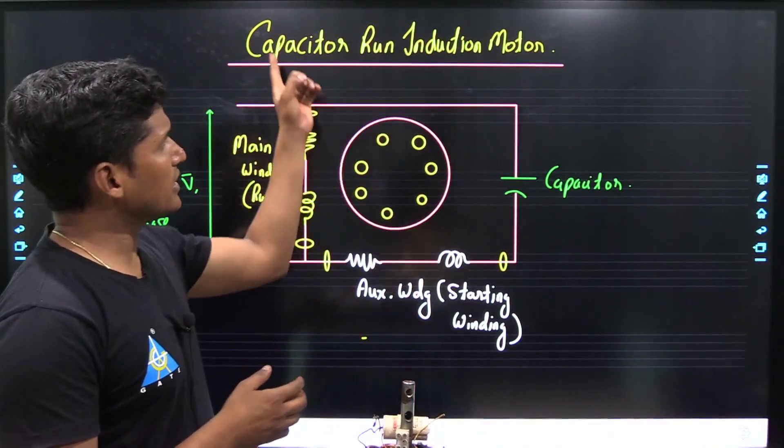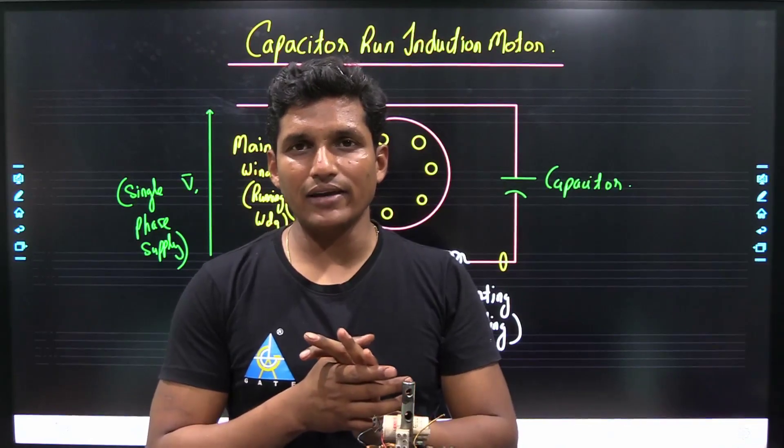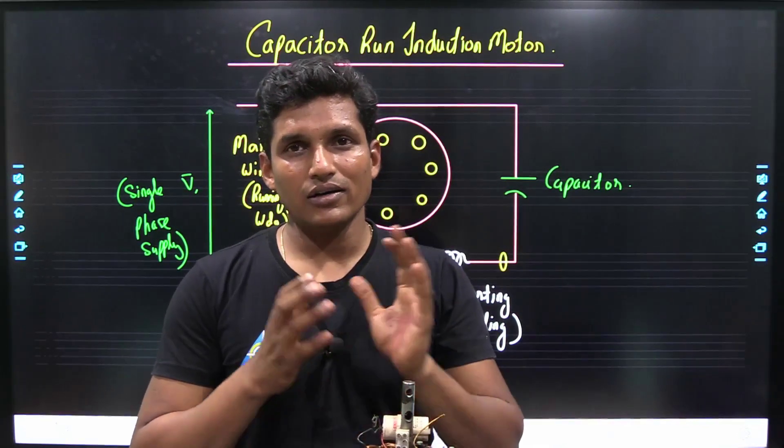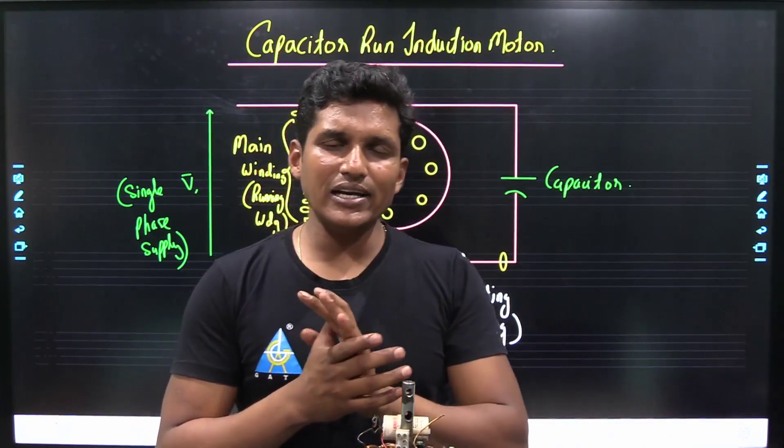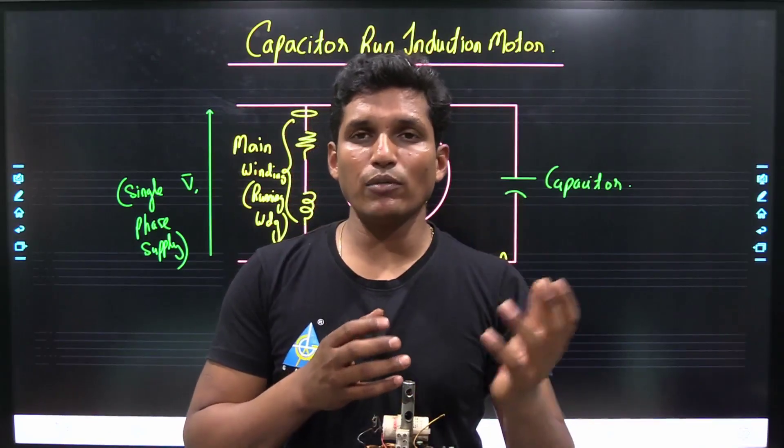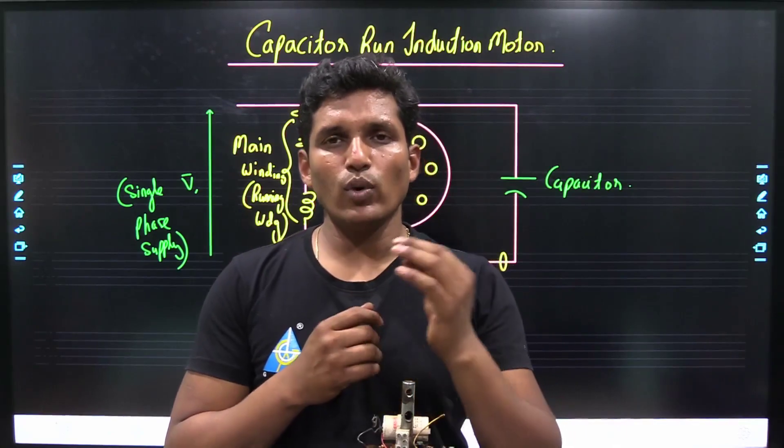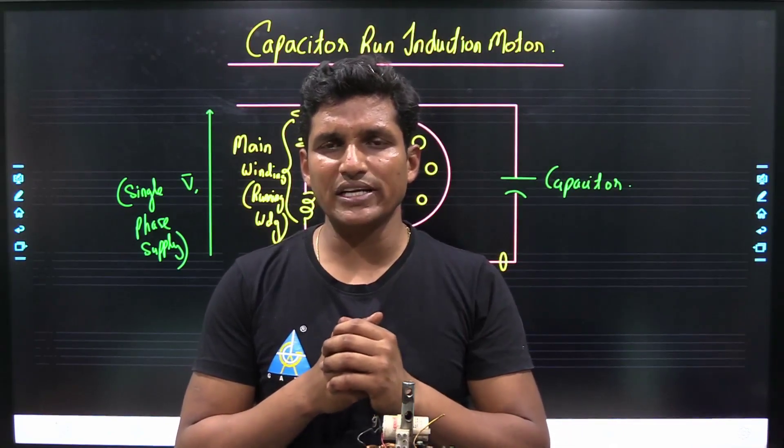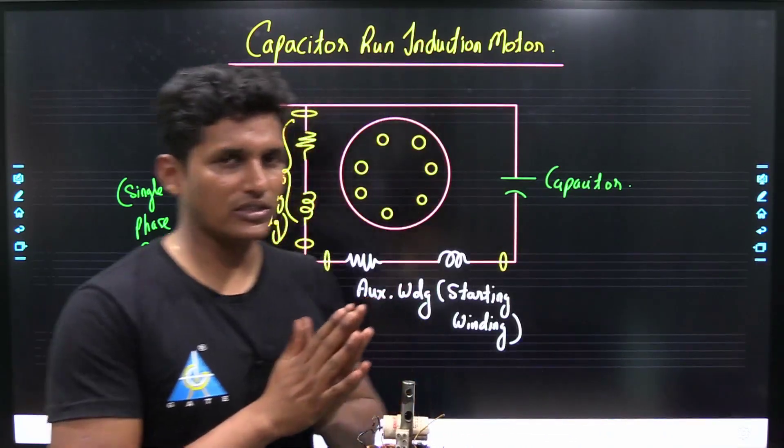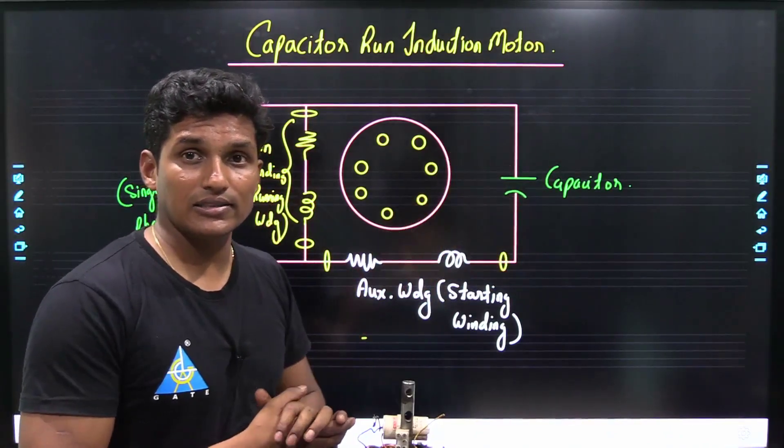In capacitor run induction motor, by the name it is specified that capacitor is permanently connected to the circuit. In capacitor start induction motor, capacitor is connected at the time of starting, but with the help of centrifugal switch, when the speed reaches 70 to 75 percent of the synchronous speed, it is disconnected from the circuit. But in capacitor run induction motor, capacitor is permanently connected in the circuit.